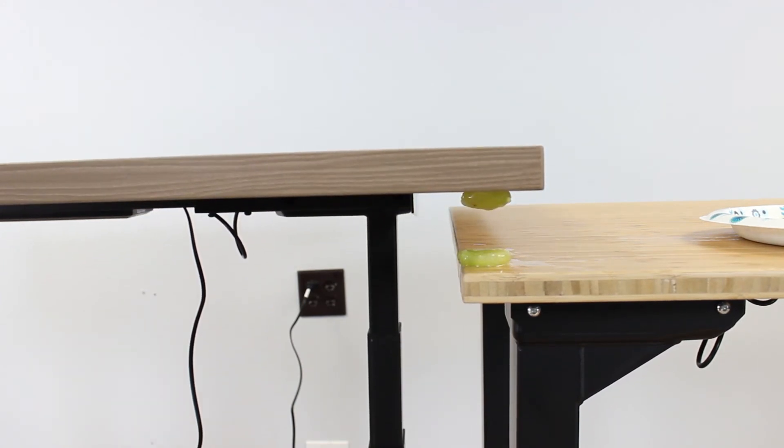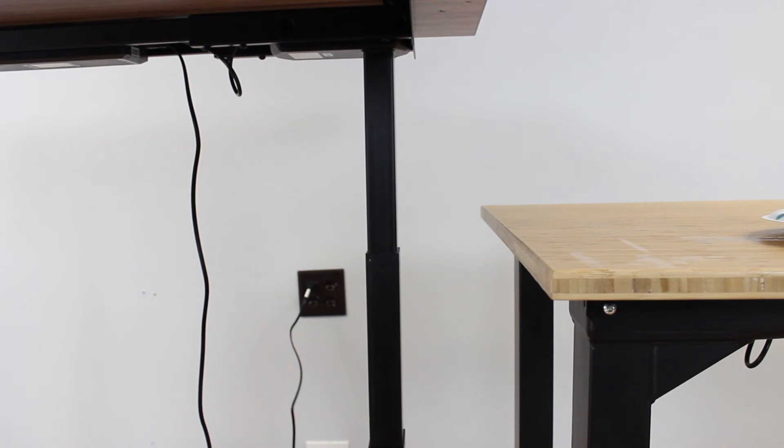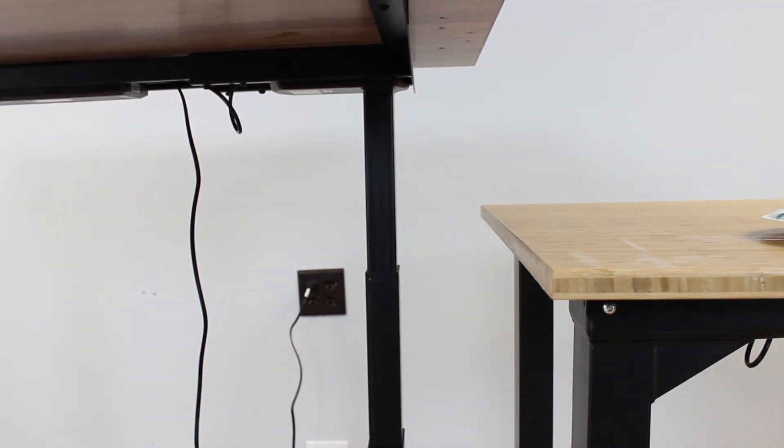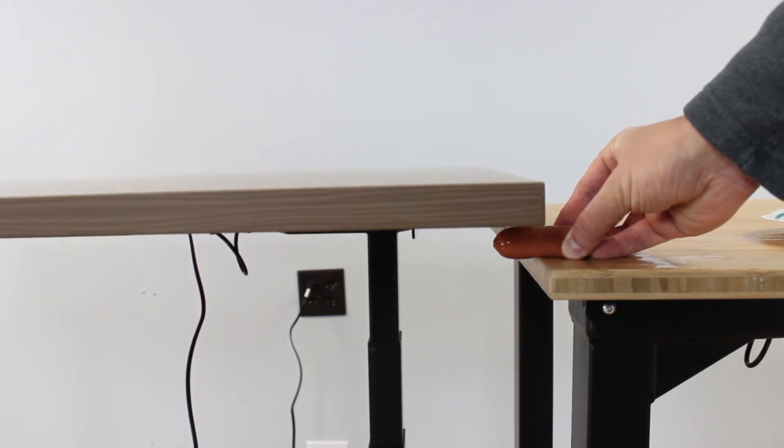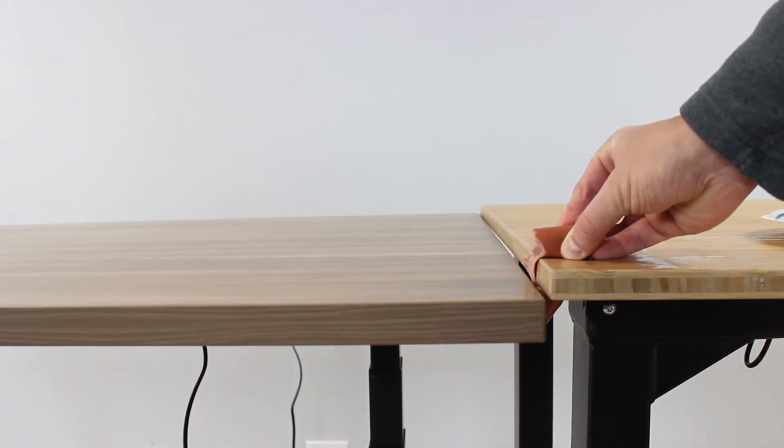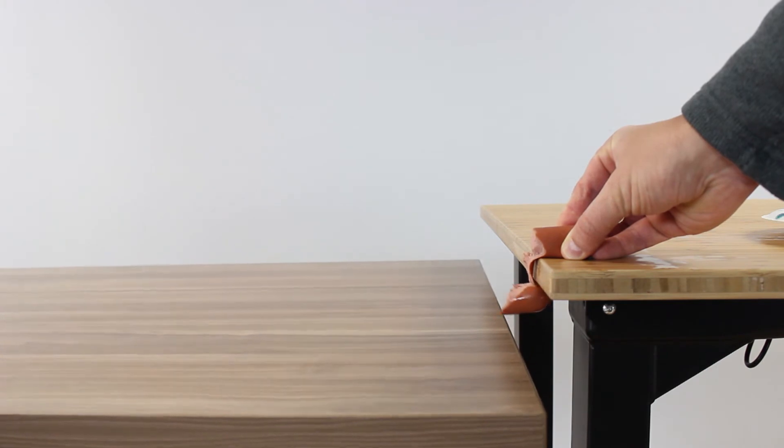Now our next test will be more of a pinch test. So we move the tables and we'll be using a hot dog for this test. And as we bring down the Jarvis desk you can see it makes a clean break right through the hot dog.